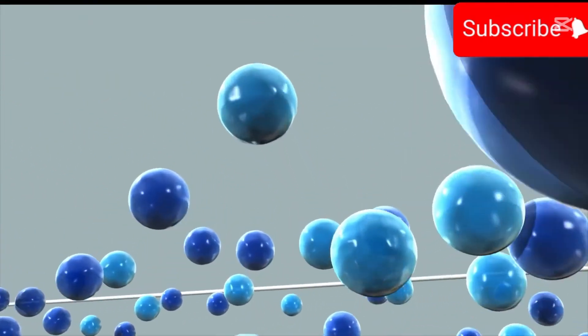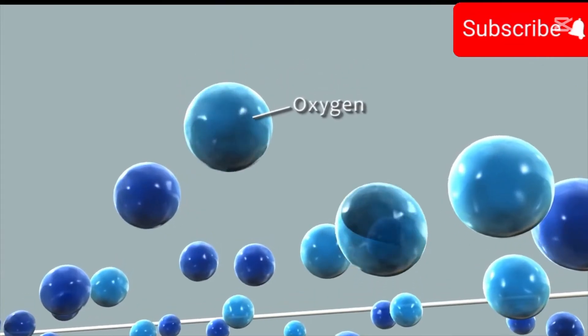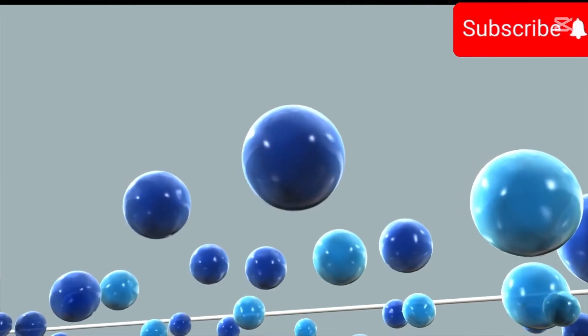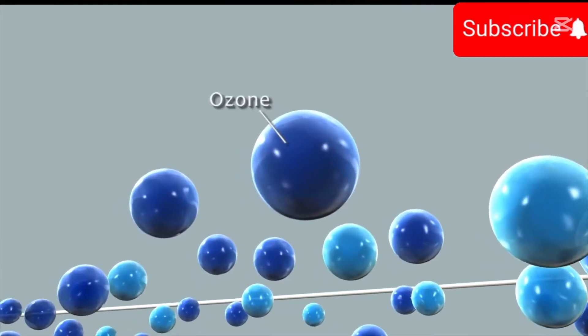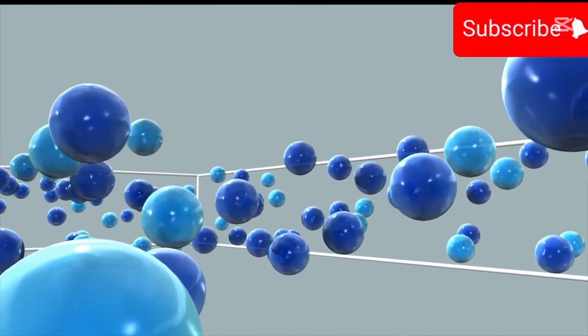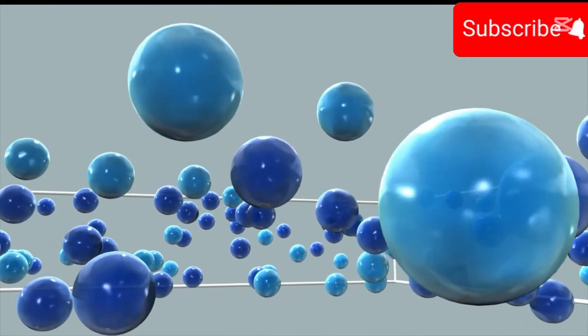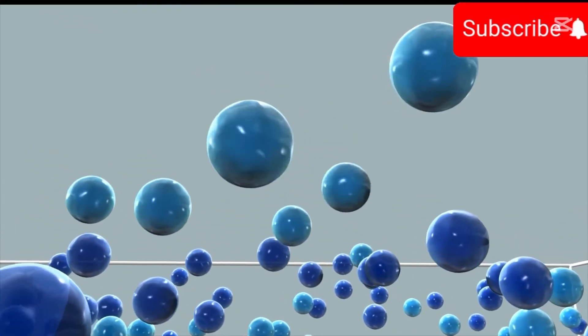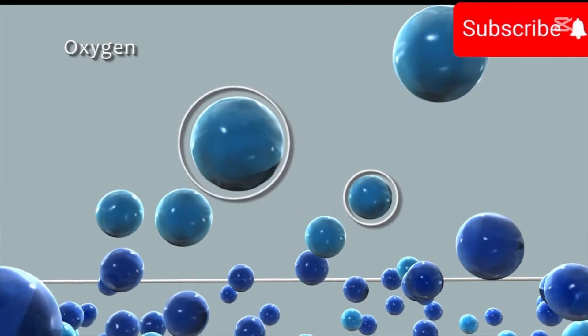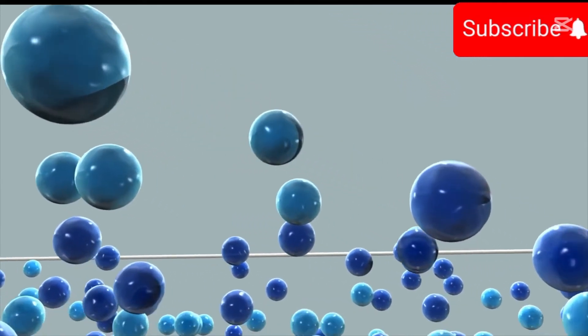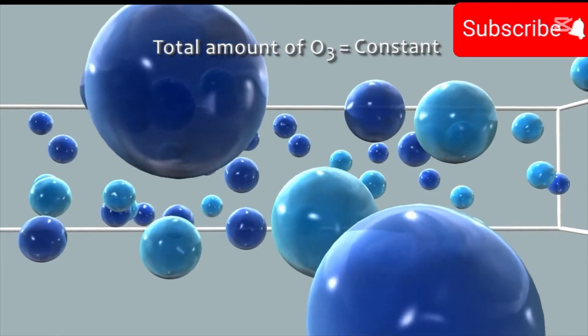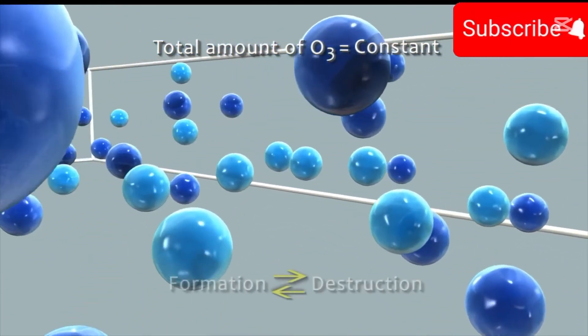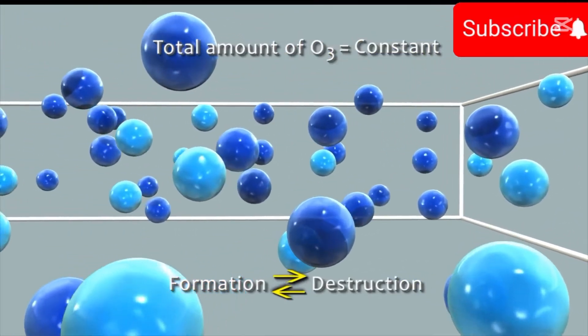In the stratosphere, by the action of sunlight on oxygen, a small amount of ozone is constantly being synthesized. At the same time, ozone is being broken down by natural processes. But the total amount of ozone usually remains constant because its formation and destruction occurs at about the same rate.